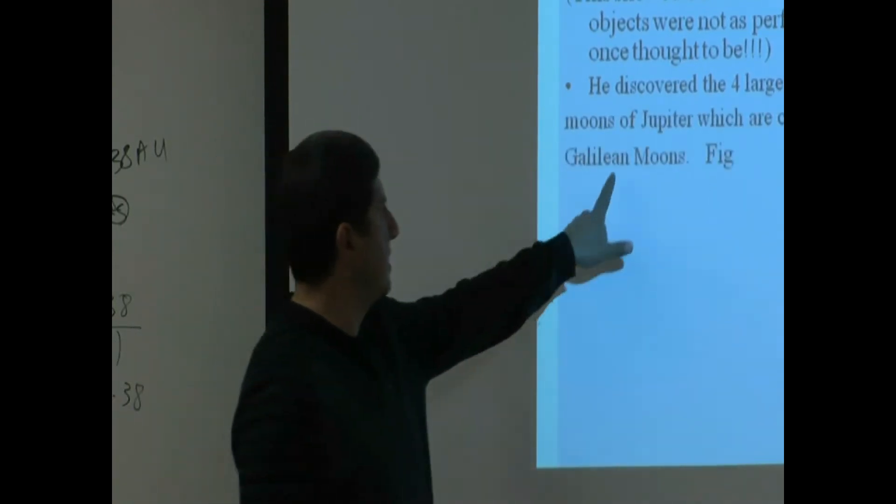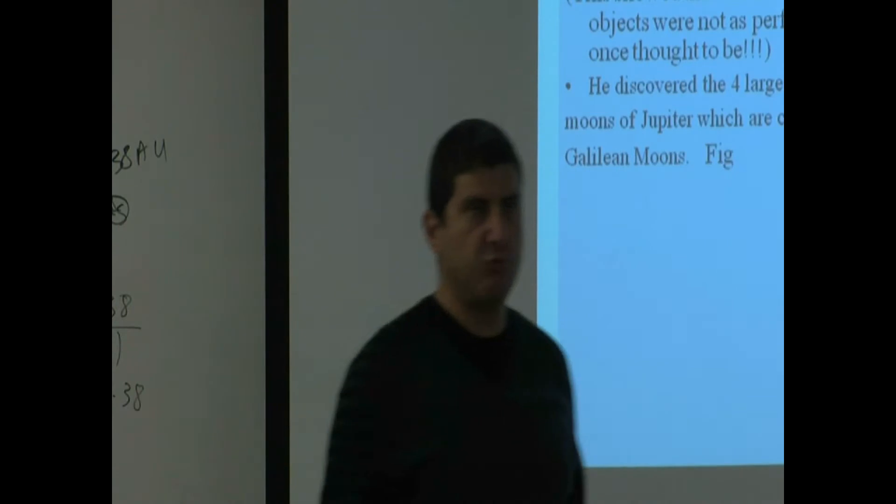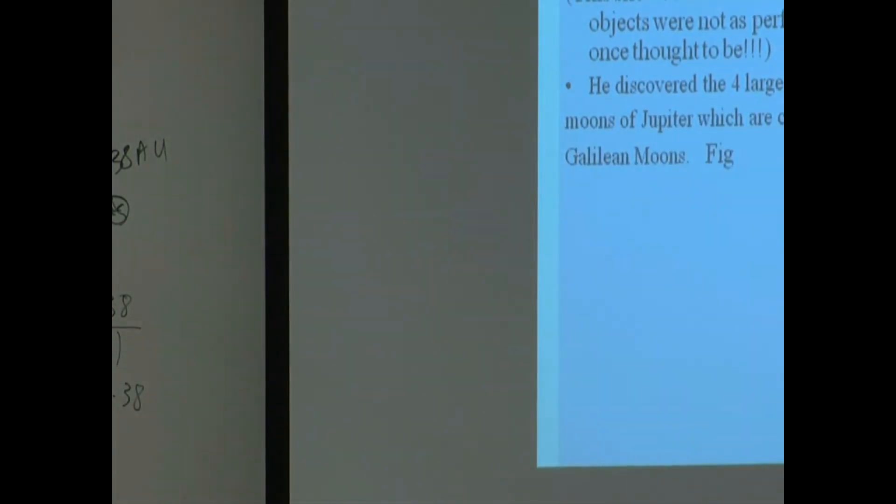These are called the Galilean moons. And when we go to the section on planets, we're going to be learning about them. Io, Europa, Ganymede, Callisto. Ganymede is the biggest moon in the solar system.